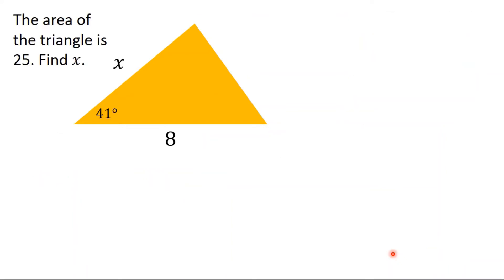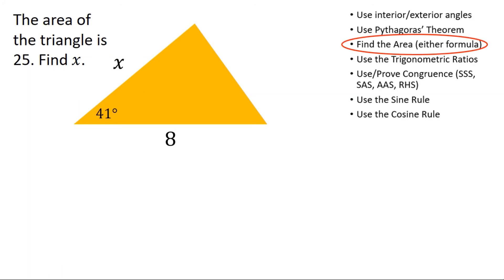Here we have a different question. The word 'area' is jumping out at me — though at GCSE it's not always that obvious; there might be a big paragraph of text and you have to pull out that we're talking about area. But I can see the word area, which means I'm going to be using my area formula. Once again, a bit of method selection: I don't seem to have a perpendicular height, but I do have a side-angle-side setup, which is the normal setup for half ab sin C — so I'm going to use that.